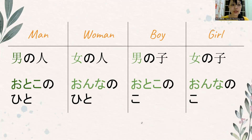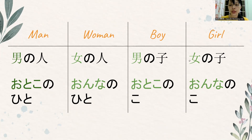Next: men, women, boy, and girl. Otoko no hito, onna no hito, otoko no ko, and onna no ko.